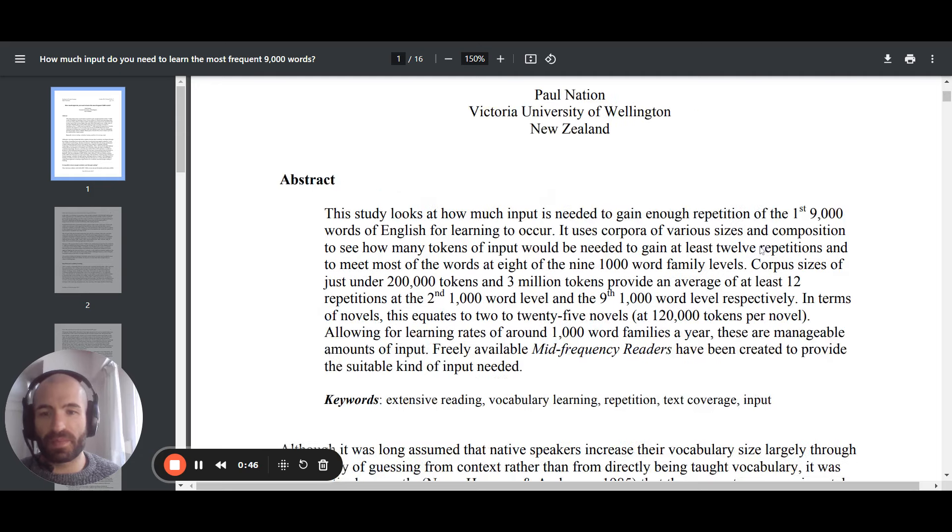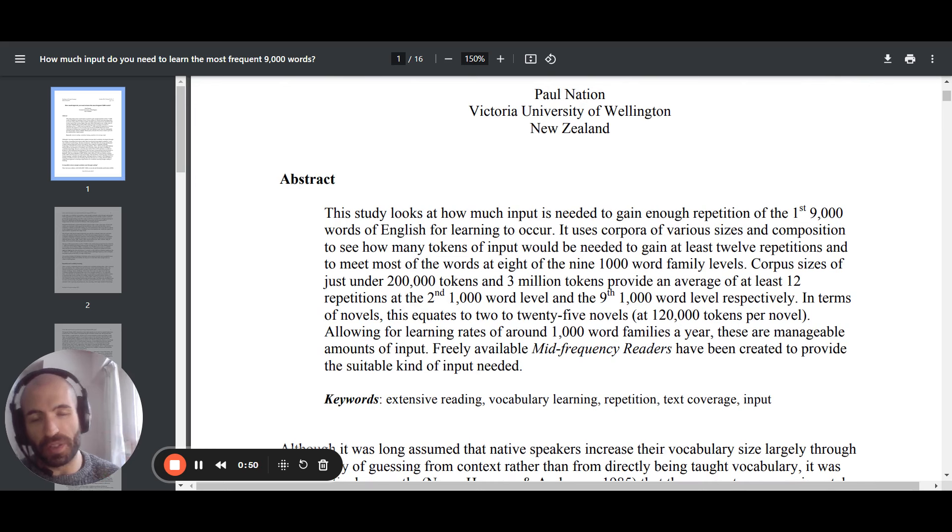And this paper assumes that you need to, again, and this also depends on, this is the problem with science, yes, there are some assumptions there. But it assumes that you need around 12 repetitions. See the same word 12 times in context to actually remember it. Again, it will really depend on the person. Some people, I've coached some people, absolute geniuses. They could read something and remember all the vocab first time. Some others will never remember anything. But anyway. So here, it assumes that you need around, on average, 12 repetitions in the same word.